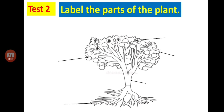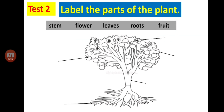For Test Two, we are going to label the parts of the plant. The words you are going to use are: stem, flower, leaves, roots, and fruit. Use those words to answer and label the parts of the plant.